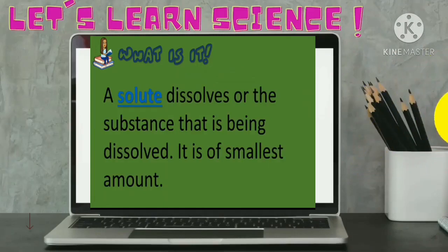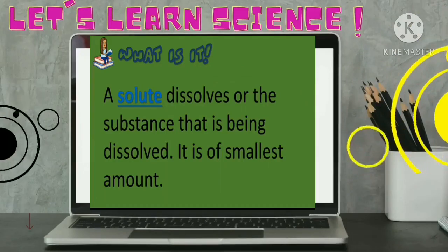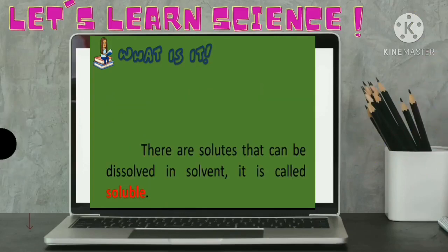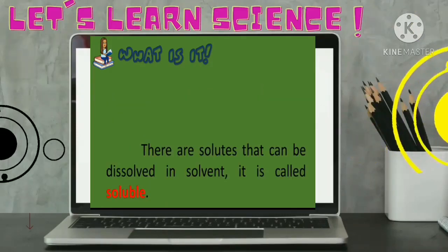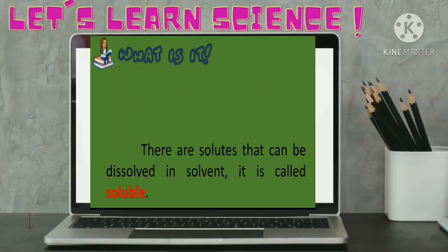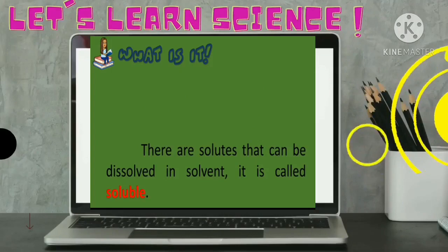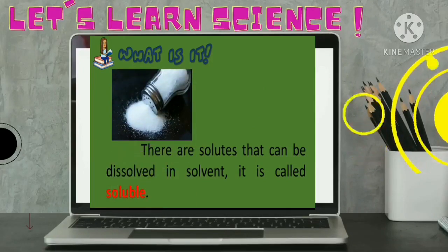Another substance from the solution is a solute. A solute dissolves or the substance that is being dissolved. It is of the smallest amount. There are solutes that can be dissolved in a given solvent. They are called soluble. Example of soluble materials are salt and sugar.